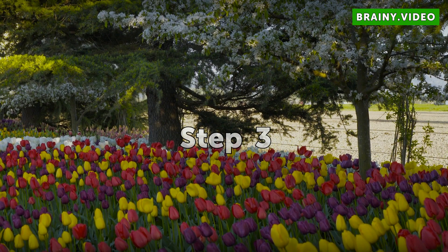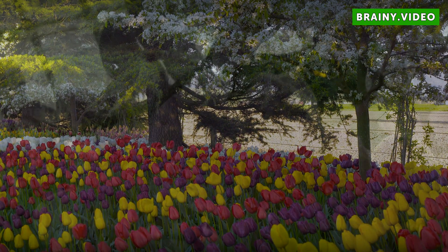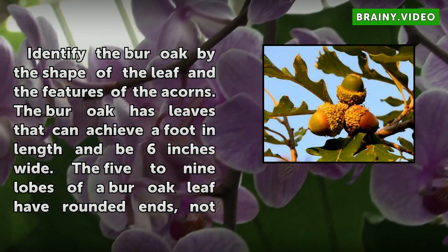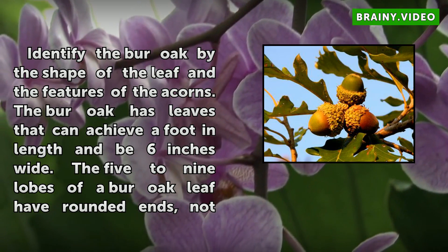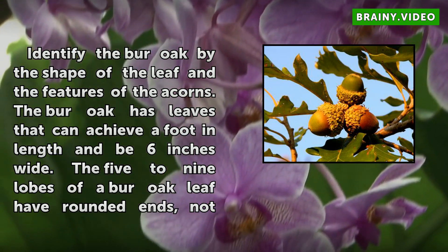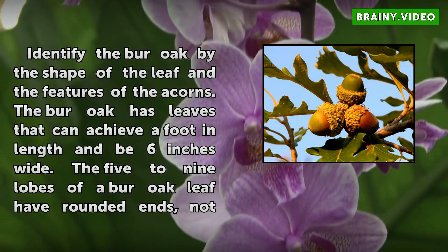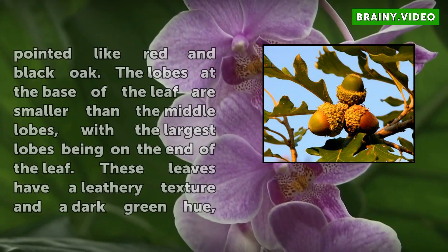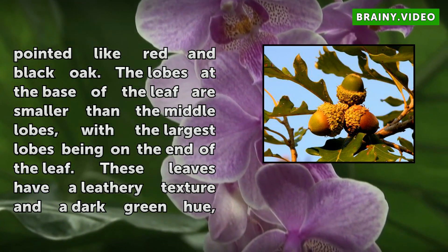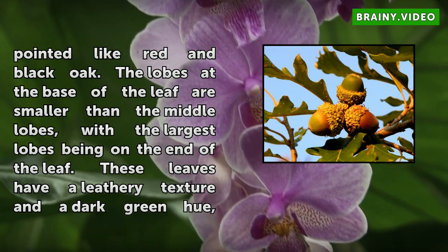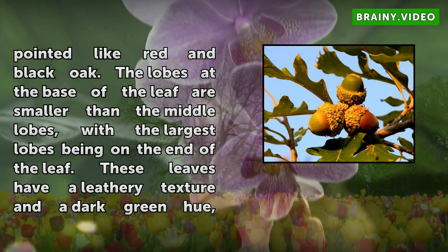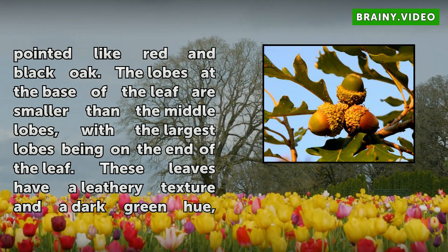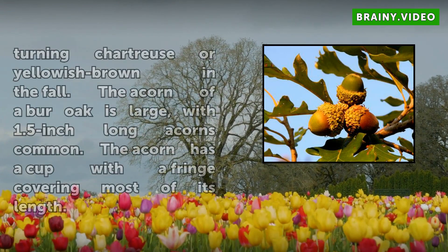Step 3. Identify the bur oak by the shape of the leaf and the features of the acorns. The bur oak has leaves that can achieve a foot in length and be 6 inches wide. The 5 to 9 lobes of a bur oak leaf have rounded ends, not pointed like red and black oak. The lobes at the base of the leaf are smaller than the middle lobes, with the largest lobes being on the end of the leaf. These leaves have a leathery texture and a dark green hue, turning chartreuse or yellowish-brown in the fall.